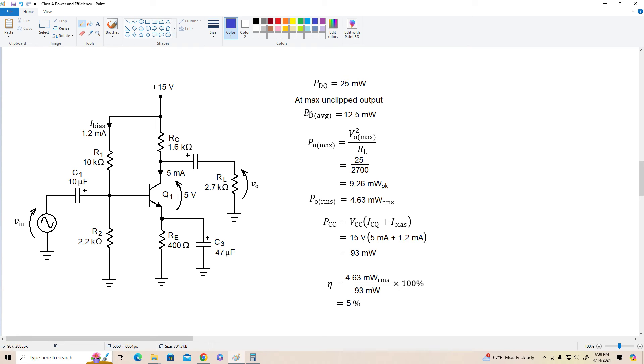So here's what we've got so far. Our PDQ is 25 milliwatts. At maximum unclipped output the transistor dissipates 12.5 milliwatts. Our PO max is V out max squared over RL, 25 over 2700 is about 9.26 milliwatts peak, 4.63 milliwatts RMS. Now our total DC power supply power delivered to this amplifier is 15 volts times 5 milliamps ICQ plus 1.2 milliamps through our bias or 93 milliwatts. So the efficiency of this amplifier is the maximum RMS output 4.63 milliwatts divided by our total absorbed from the power supply 93 milliwatts and that works out to be five percent. So this amplifier is five percent efficient.